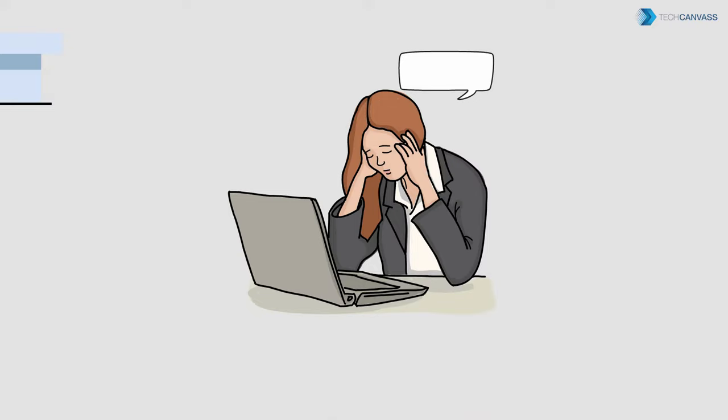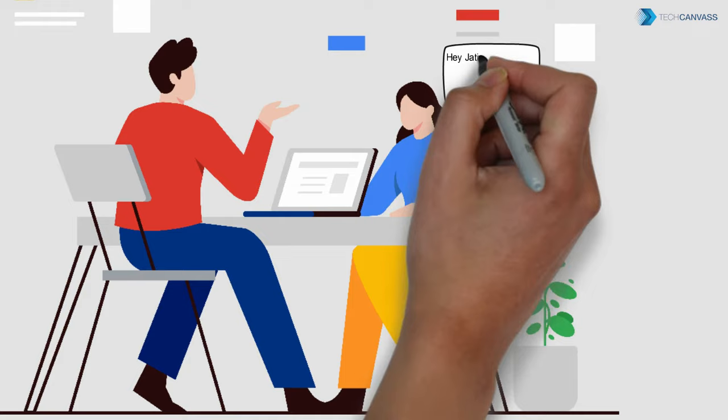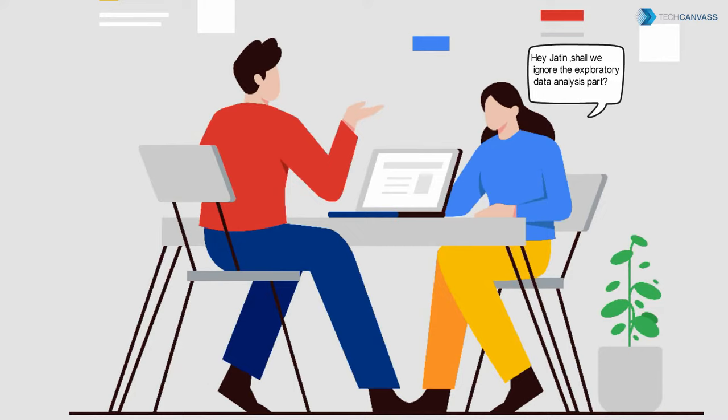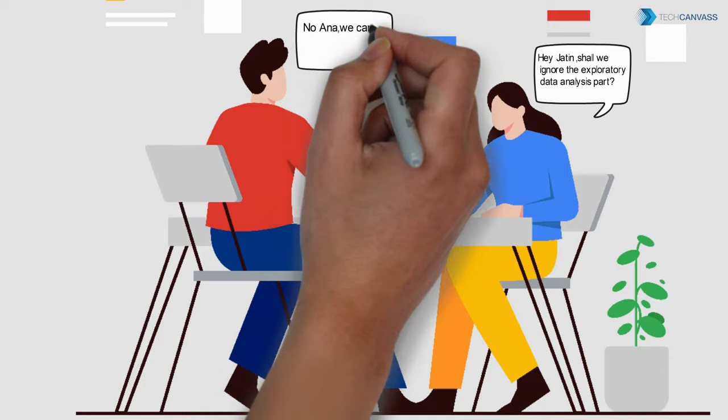Anna is a business data analyst worried about meeting tight project deadlines. The business stakeholders need insights on why customers are churning and how to prevent that. She proposes to her manager Jatin that they skip the exploratory data analysis part and move on to the actual data analysis, suggesting they ask data scientists to share the best-suited machine learning algorithm. Jatin listens but tells her he disagrees.